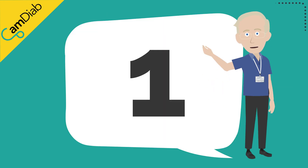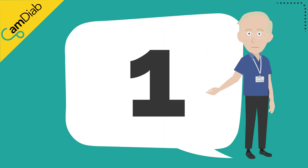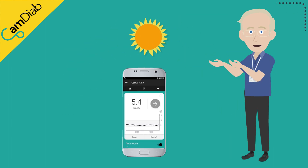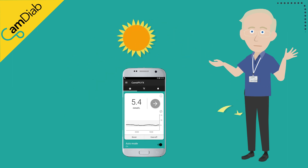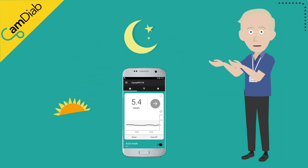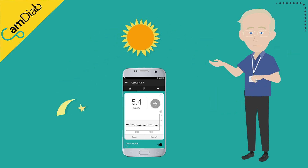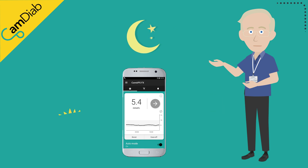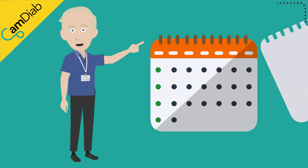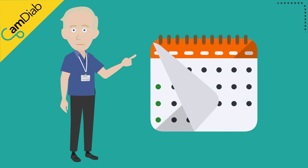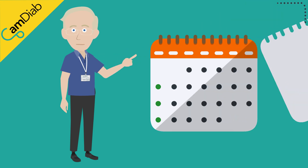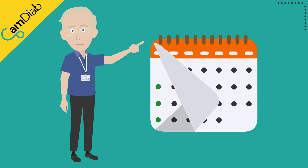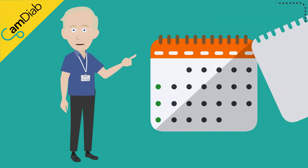The first way CAM-APSFX learns is around the overall insulin requirements — how much insulin is needed on average in a 24-hour period. The algorithm is updated once a day at around midnight, by analyzing how much insulin was needed the previous day and how glucose levels responded. More recent days are weighted more heavily than distant past days, a process called exponential forgetting. This allows CAM-APSFX to adapt quickly to changes in overall insulin needs.